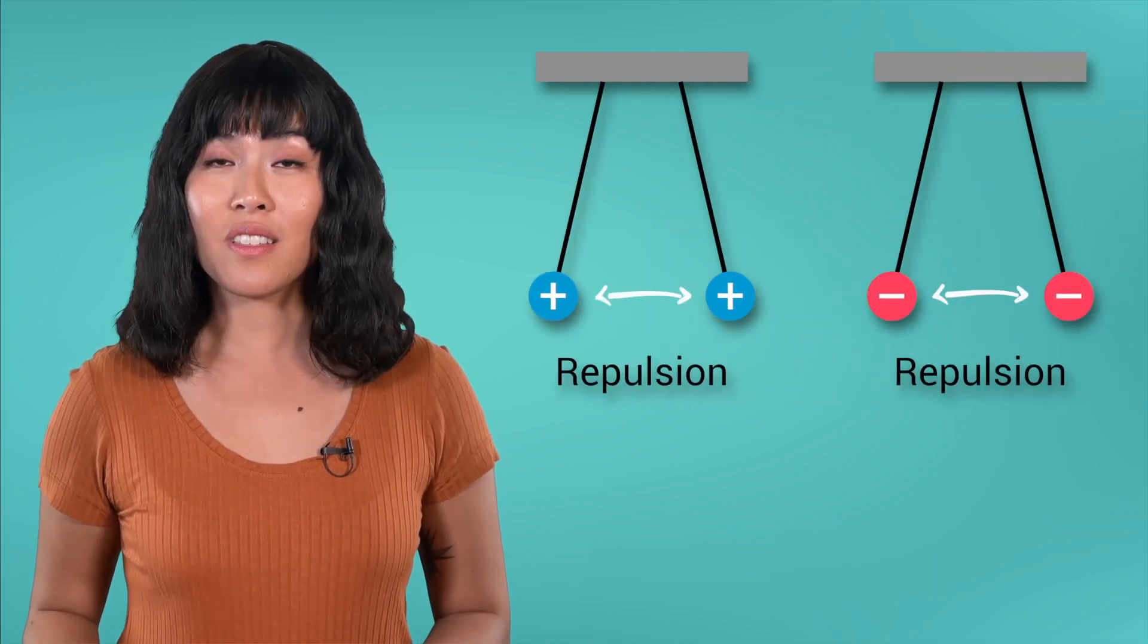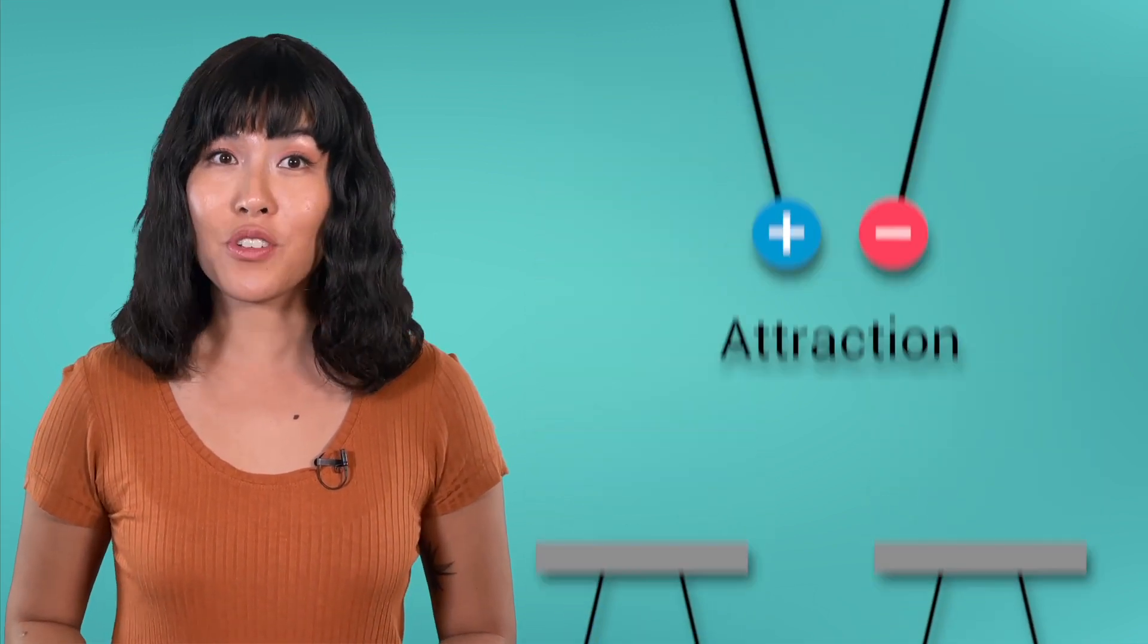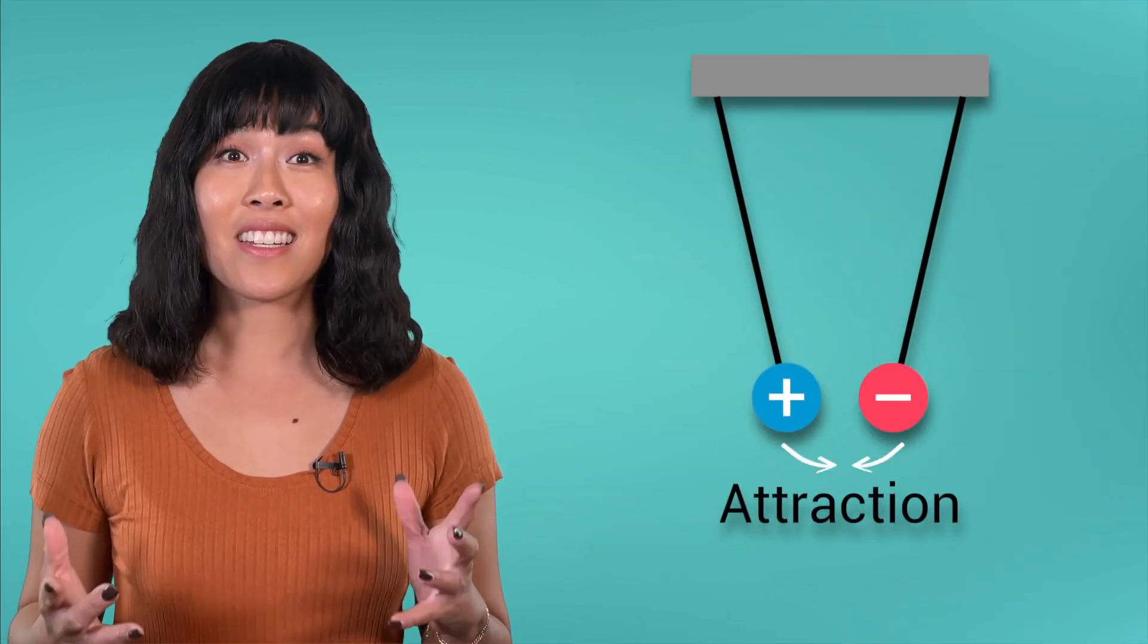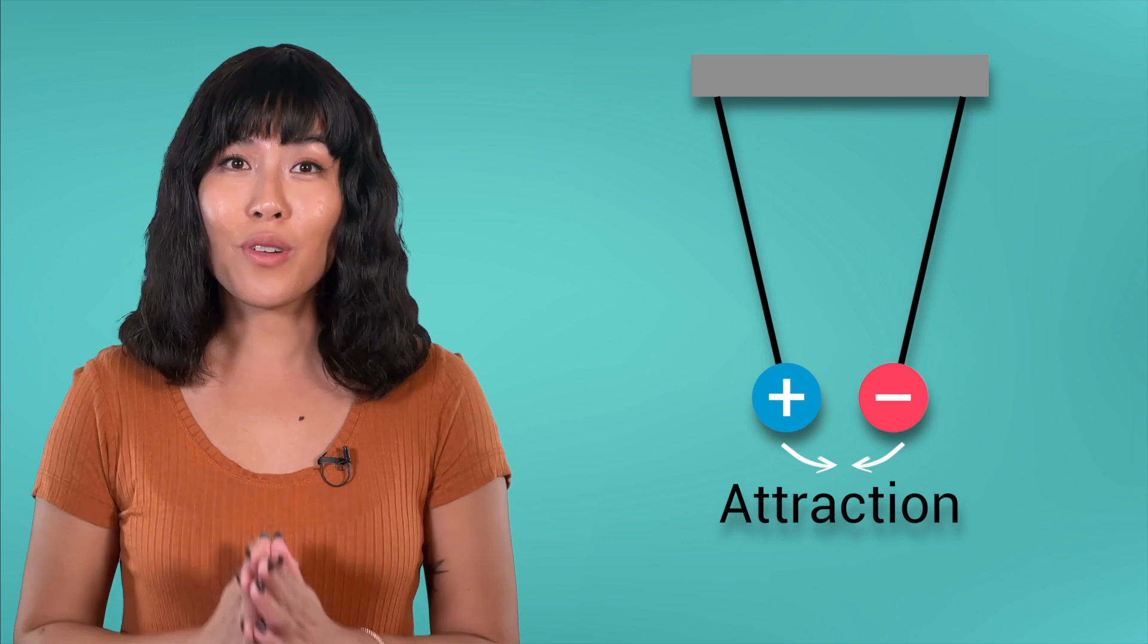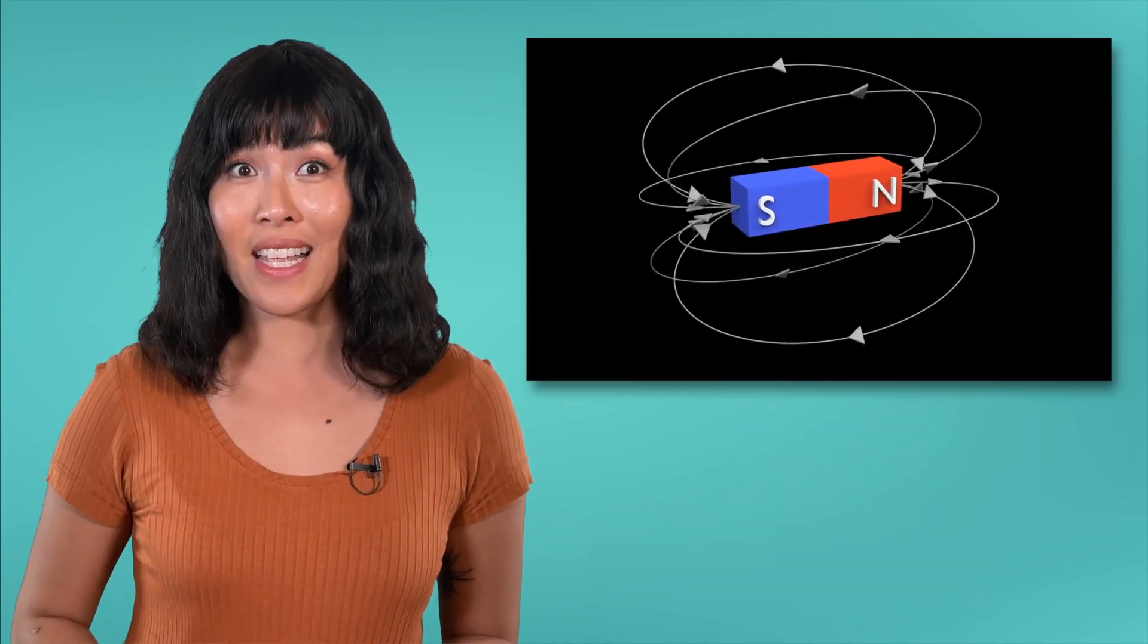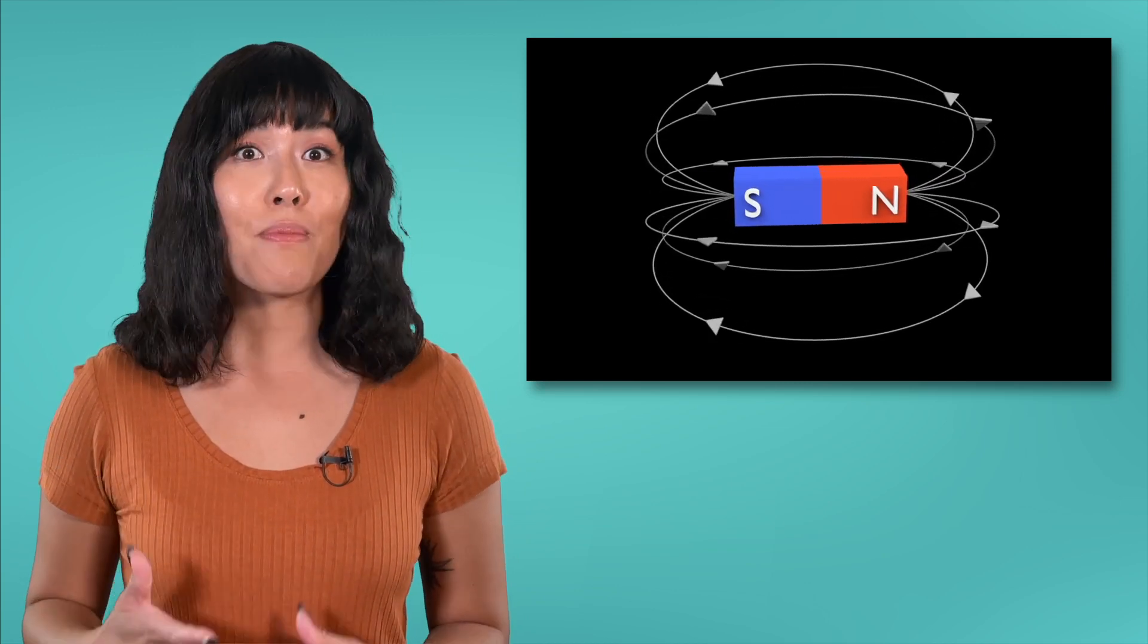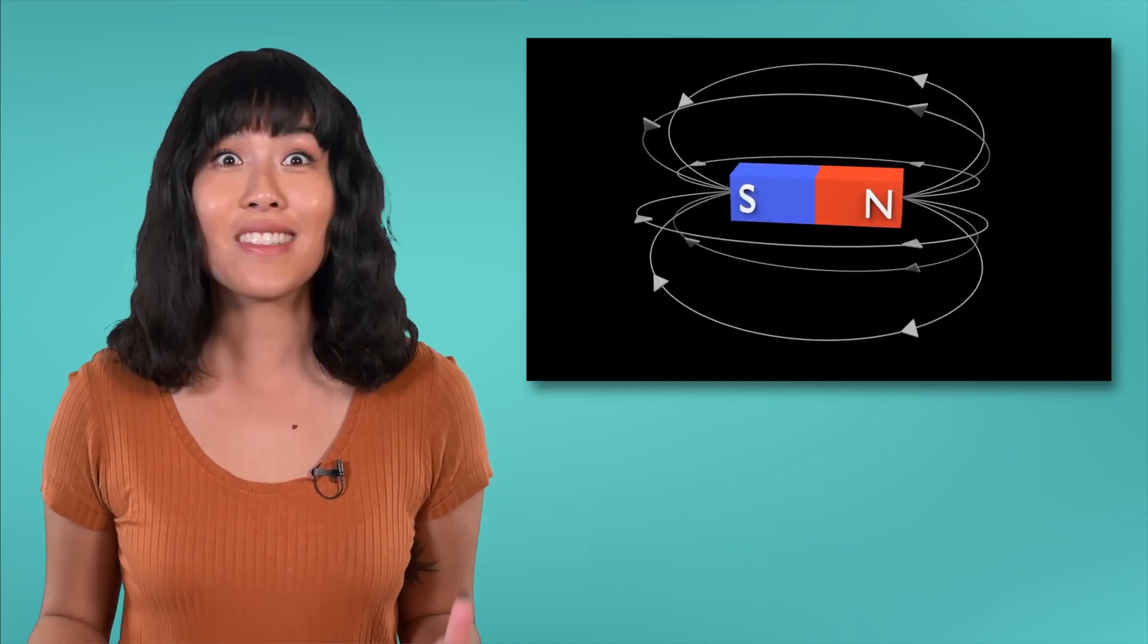Electrical charges work in the exact same way. Two like charges, such as two protons or two electrons, will repel each other, while opposite charges such as a proton and electron, will attract. In fact, spoiler alert, we'll find out in an upcoming lesson on magnets that their north and south poles are caused by the behavior of electrons as well.